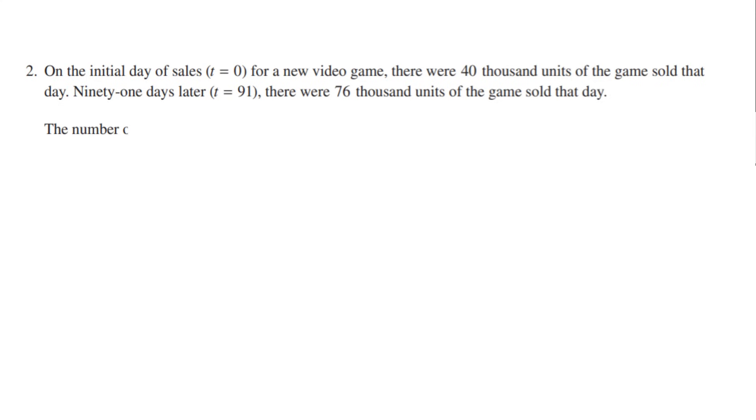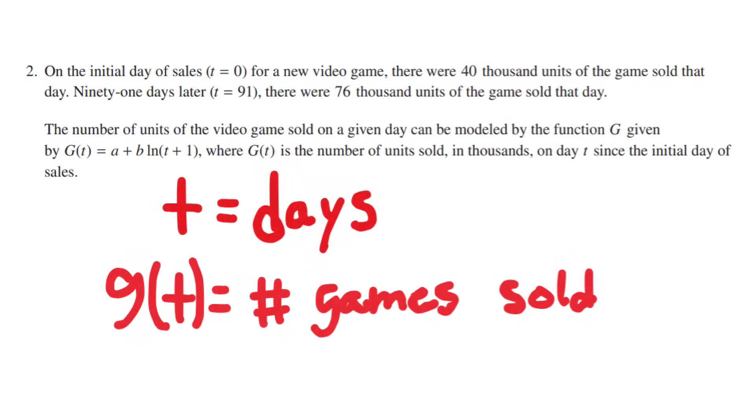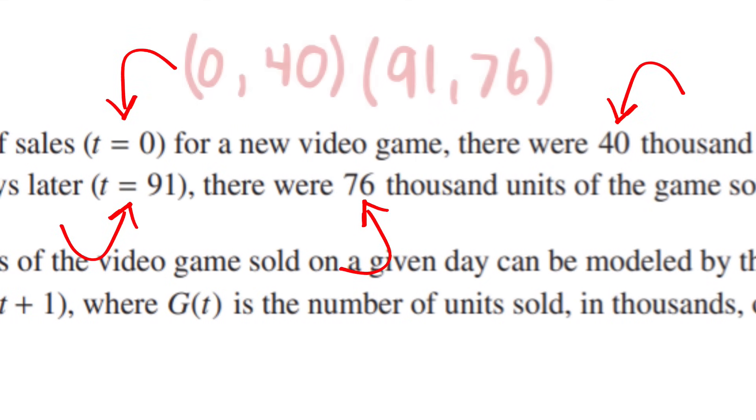So let's start reading. On the initial days of sales, t equals 0, for a new video game, there were 40,000 units of the game sold that day. 91 days later, t equals 91, there were 76,000 units of the game sold that day. The number of units of the video game sold on a given day can be modeled by the function g, given by g(t) = a + b*ln(t+1), where g(t) is the number of units sold, in thousands, on day t since the initial day of sales. So t is our days, and g(t) is how many games are sold on a given day. Let's turn the two points they give us into xy coordinates.